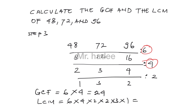That equals 288. So the GCF of 48, 72, and 96 is 24, and the LCM is 288.